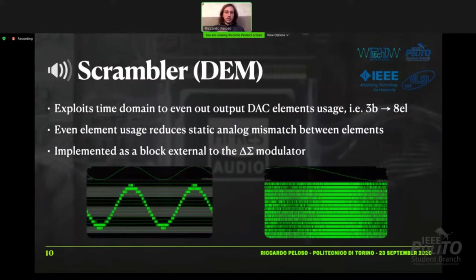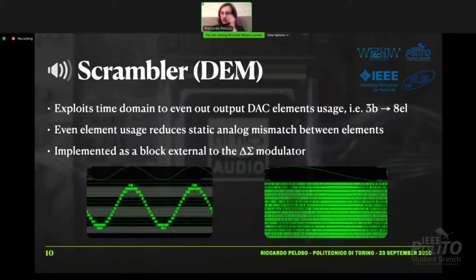Then we have the scrambler, also called the dynamic element matching part. It exploits the time domain to even out the usage of each individual element, each individual DAC. From three bits we can obtain eight elements. By evening out the element usage, we can embed in each individual element the input signal and help the linearity without resorting to complex analog calibration and design resources to recreate the input audio signal. This is mostly done as a block external to the delta-sigma modulator.